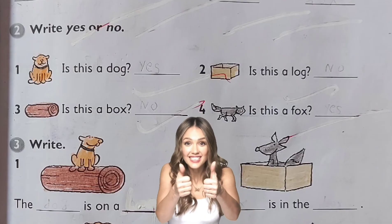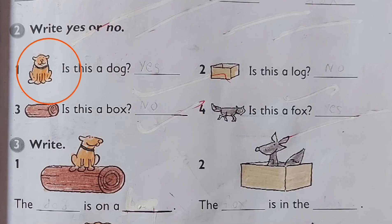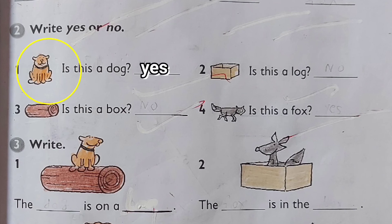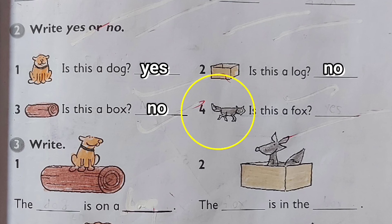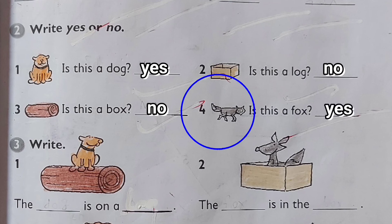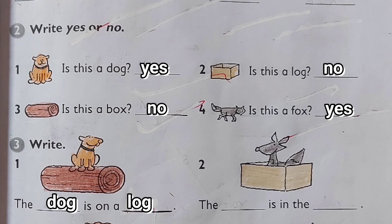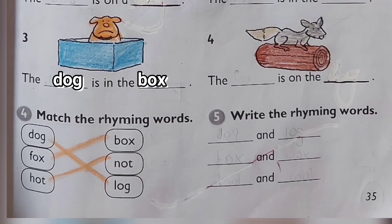Question number two: write yes or no. Number one: is this a dog? Yes, it's a dog. Number two: is this a log? No, it's a box. Number three: is this a box? No, it's a log. Number four: is this a fox? Yes, it's a fox. Question number three: look at the picture and write. The dog is on a log. The fox is in the box. The dog is in the box. The fox is on the log.